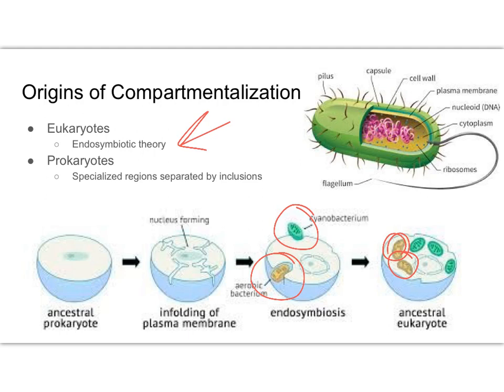Even though prokaryotes don't have membrane-bound organelles, they still have specialized areas within their cell. These specialized areas are separated by what we call inclusions — cytoplasmic structures that hold a particular compound, or mark the area where DNA is concentrated, or where ribosomes are. These inclusions help separate areas of the prokaryotic cell so it can perform more specialized functions.